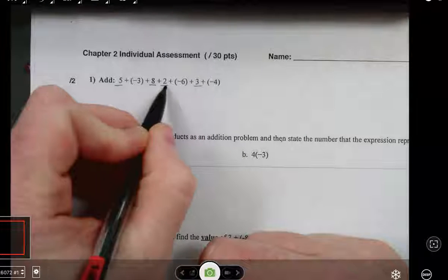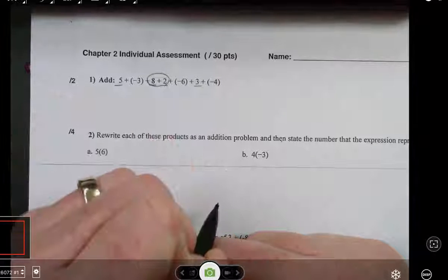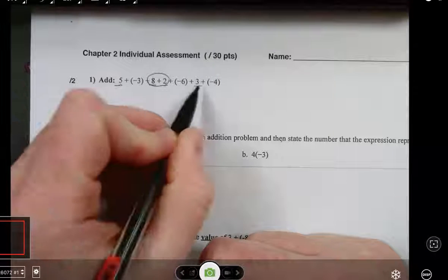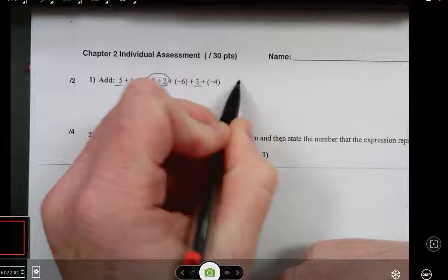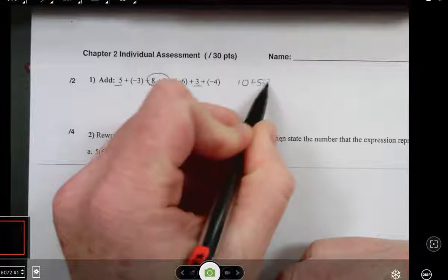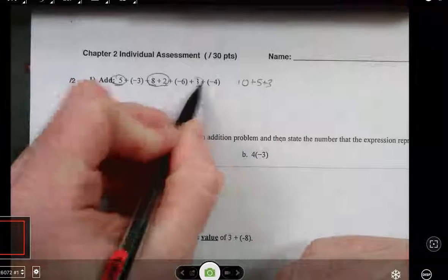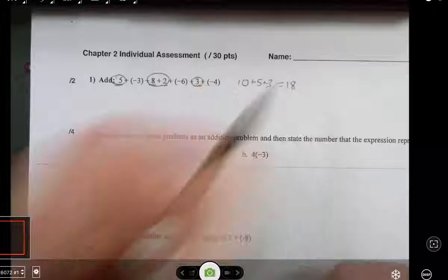So the first thing I notice is this is 10. And then I have a 5 and a 3. So I have 10, 5, and 3. And that gives me a positive 18.